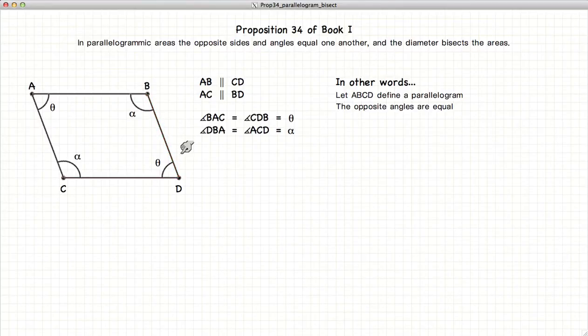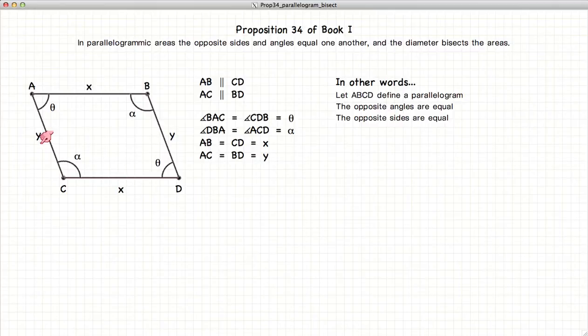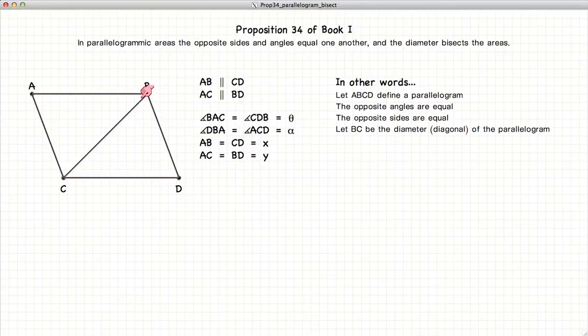If we have this, then the angles opposite each other are equal, and the lengths of the sides opposite each other are equal. In addition to that, if we have a diagonal in our parallelogram, it bisects the area of the parallelogram.